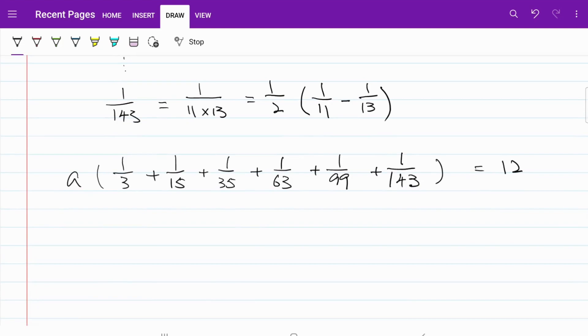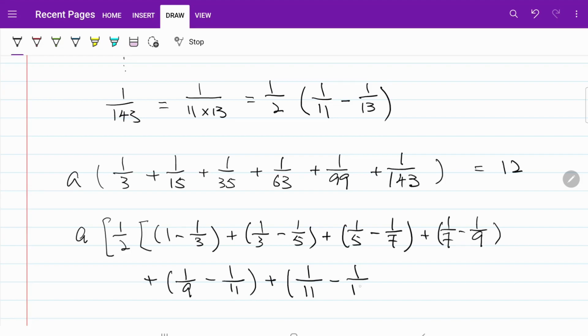I can actually write the fraction as a half multiplied by 1 minus 1 over 3 plus 1 over 3 minus 1 over 5 plus 1 over 5 minus 1 over 7 plus 1 over 7 minus 1 over 9 plus 1 over 9 minus 1 over 11 plus 1 over 11 minus 1 over 13 and that's equal to 12.